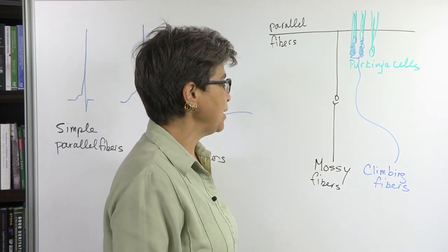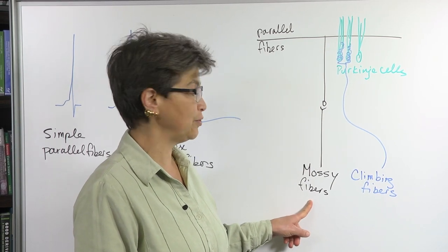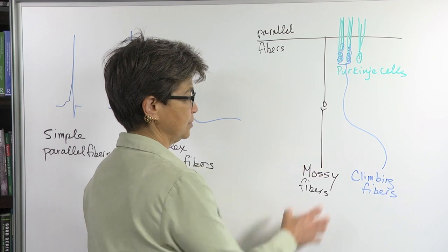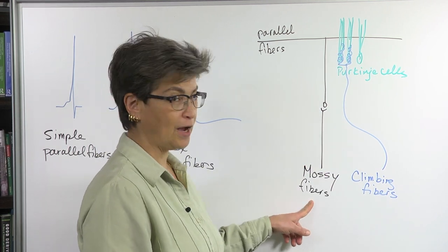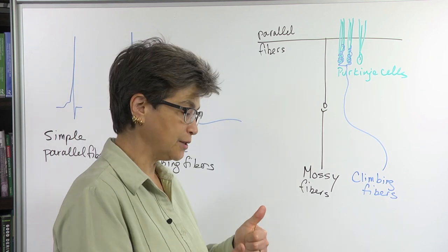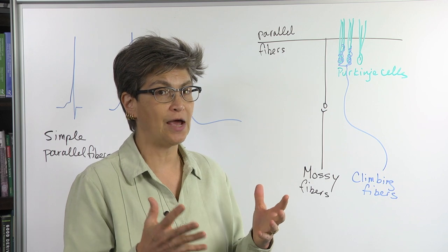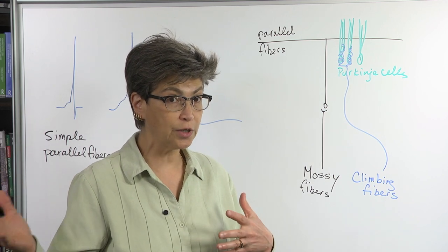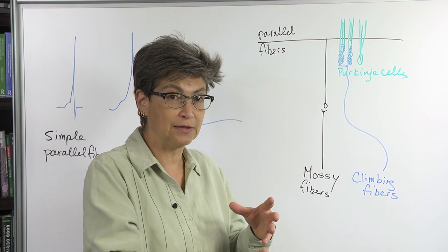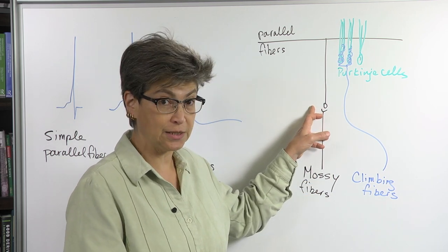And the information about both efference copy and sensory reafferents all comes in via mossy fibers. These are fibers that come in from precerebellar nuclei. In the case of, say, sensory afferents coming in from the spinal cord, there's a specific nucleus that gives rise to the neurons that project into the cerebellum.